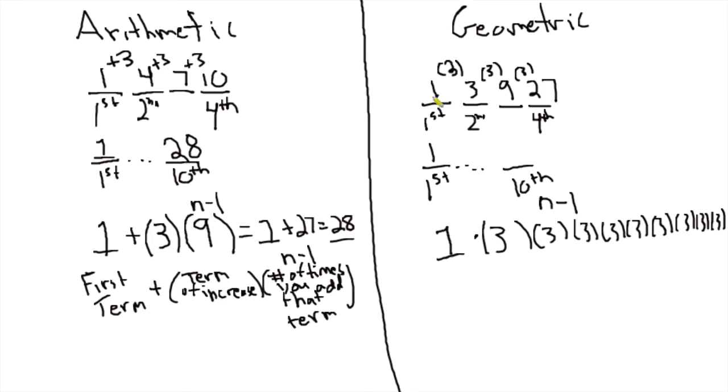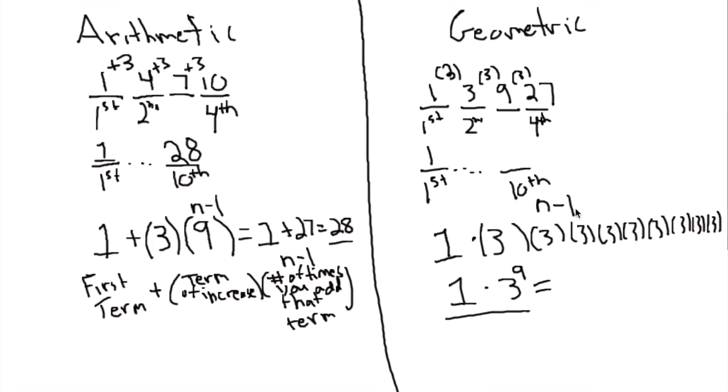So we're multiplying 1 by 3 nine times. So what we do, instead of writing out all those 9 threes, we just use an exponent, which is saying the same thing. So this gives you a very large number relative to where we started, 19,683. So that means the 10th term is going to be 19,683.